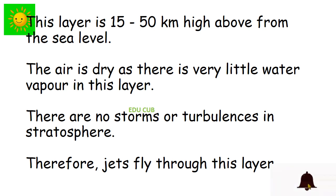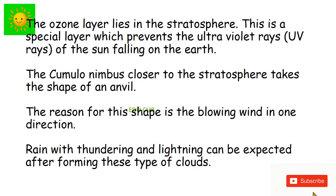The air is dry as there is very little water vapors in this layer. There are no storms or turbulences in stratosphere. Therefore, jets fly to this layer. The ozone layer lies in the stratosphere. This is a special layer which prevents the ultraviolet rays from the sun falling on the earth.